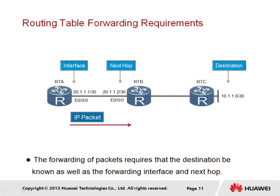Before the IP routing table is capable of supporting the communication of routes to the forwarding information base, it must, as a minimum for each destination network, know the interface via which the packet is to be forwarded and the next hop that is expected to receive the packet.